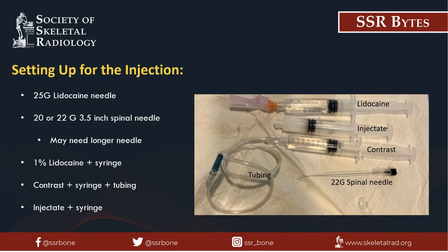The needles required will include our subcutaneous anesthetic needle, which is frequently a 25 gauge or sometimes even smaller. A 22 gauge 3.5 inch spinal needle is typically used for injecting into the hip joint. A longer needle may be required in some scenarios, such as with certain body habitus.